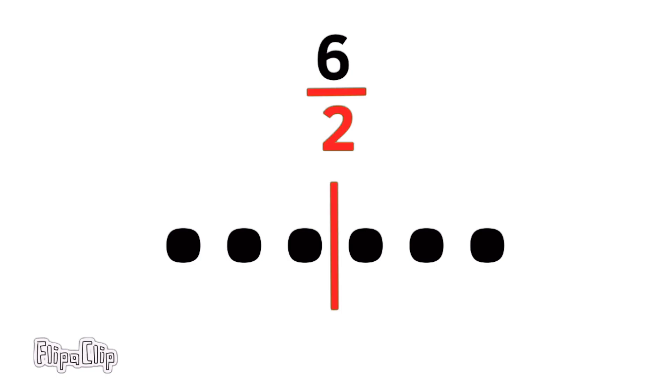Imagine six units divided by two. That would be two groups of three units. So six divided by two is three.